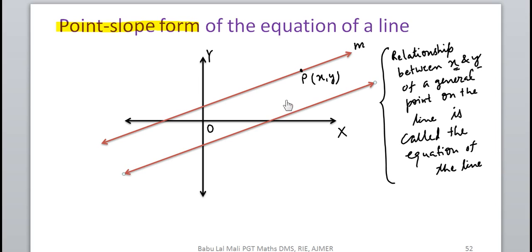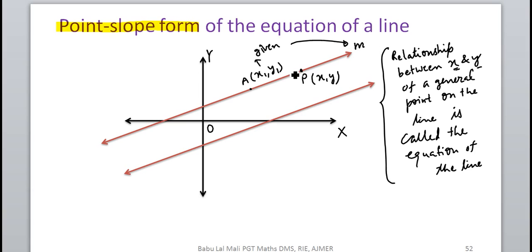There can be many lines with the same slope, because all lines parallel to each other have equal slope. So giving only the slope does not make the line unique. Therefore, along with the slope, we must also give a particular point through which the line passes. If we say the line passes through a particular point with coordinates (x₁, y₁) and has slope m, then that line will be unique.